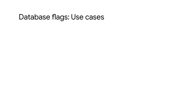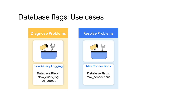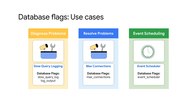Database flags can be really useful in multiple scenarios. First, they are useful for diagnosing specific problems — for example, MySQL's slow query log can be enabled to help spot performance problems. Second, database flags are useful for resolving specific issues, such as increasing max connection settings to allow more concurrent connections. Third, they can be used to enable the event scheduler for a MySQL instance to schedule tasks at regular intervals.